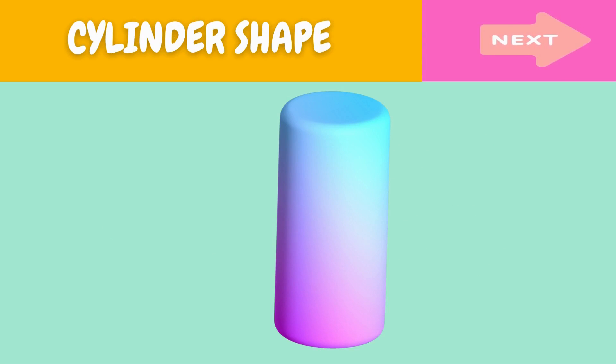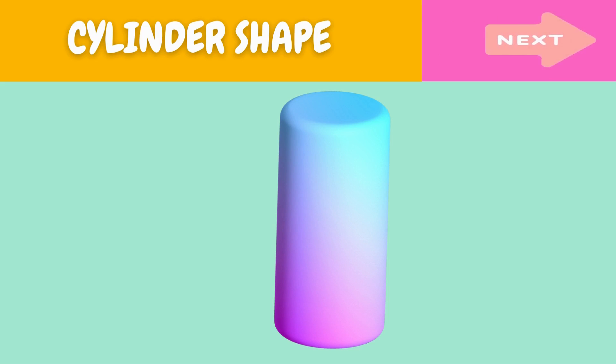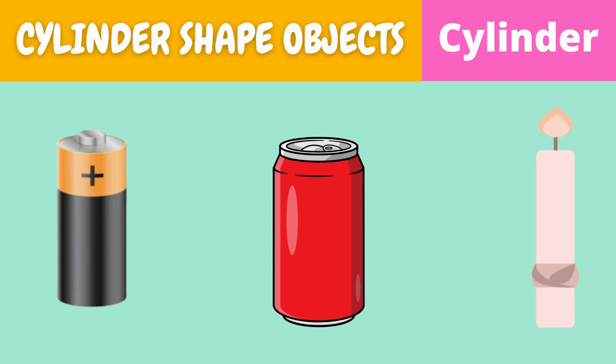This is a cylinder. What is this? This is a cylinder. Here are some examples of cylinder-shaped objects.